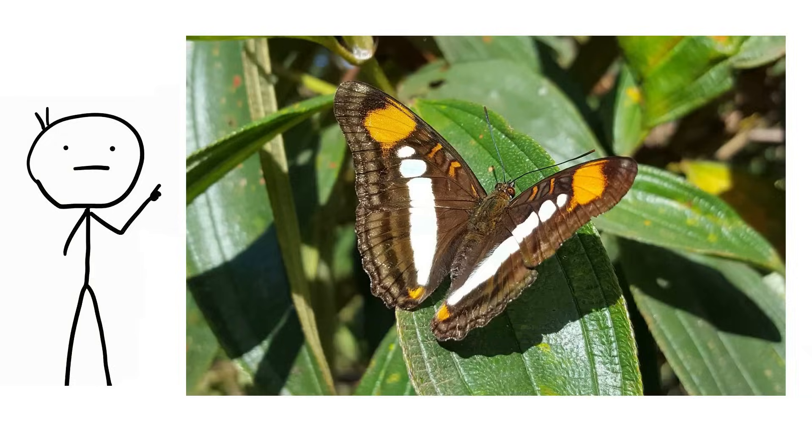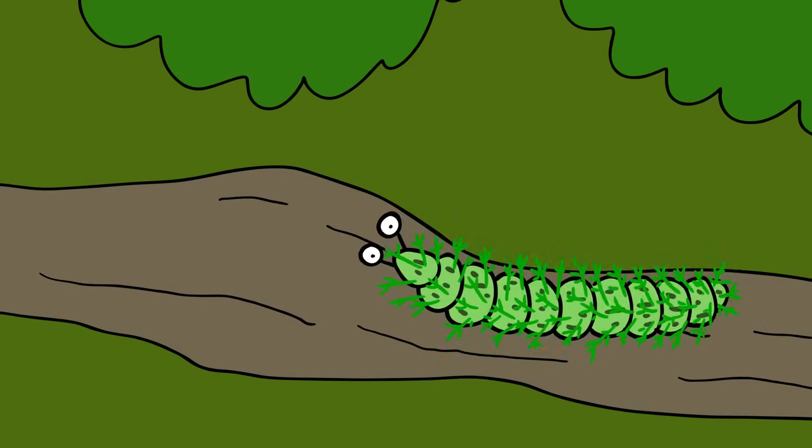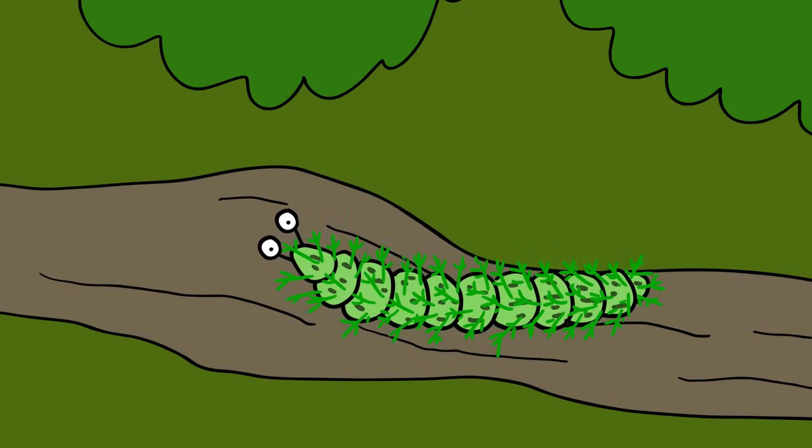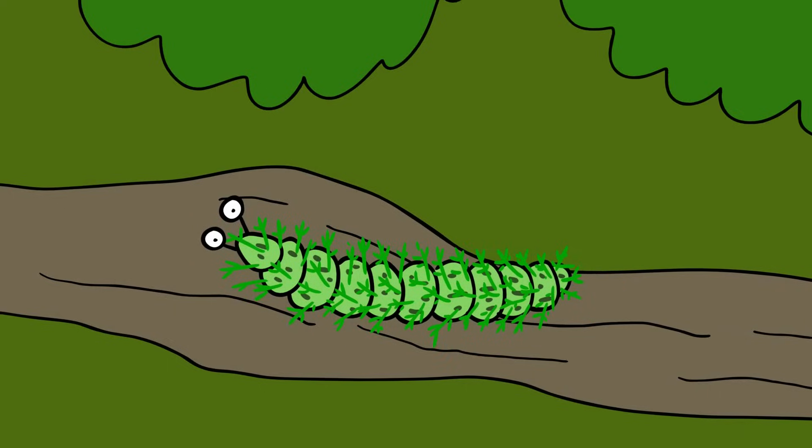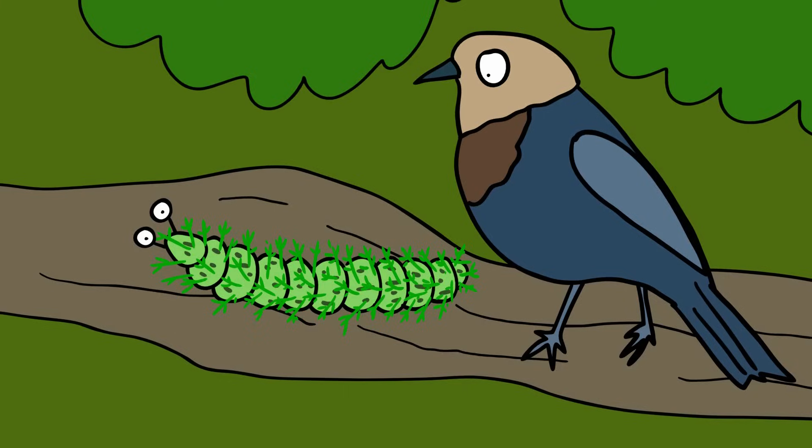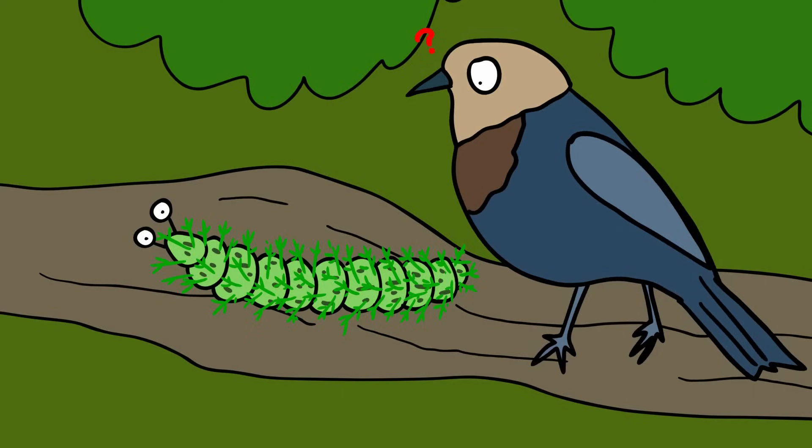Adelpha serpa telerio, before blossoming into a beautiful black-and-white butterfly, the young form of Adelpha serpa telerio is a nightmarish monstrosity. As a caterpillar, this little creature is covered in fluffy little spikes that look remarkably like leaves. With its mostly green coloring, this makes the caterpillar resemble moss, keeping it safe from nearby predators.